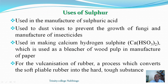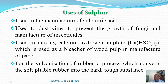We now summarize by looking at the uses of sulfur. We have talked about how sulfur is formed, obtained, where it is found, its allotropes, and its physical and chemical properties. The most important use of sulfur is in the manufacture of sulfuric acid, which is useful in various industrial and non-industrial processes. Sulfur is also used to dust vines to prevent the growth of fungi, and some people use sulfur to treat fungal infections. Sulfur is also used in the manufacture of calcium hydrogen sulfite, which is a bleaching agent in wood pulp, especially in the formation of paper.